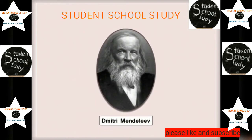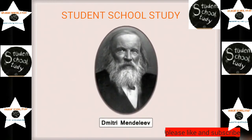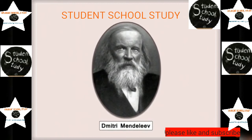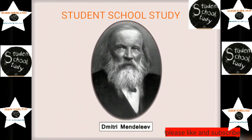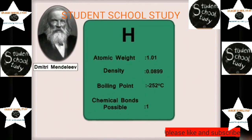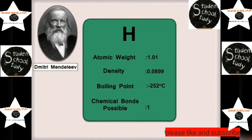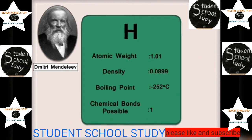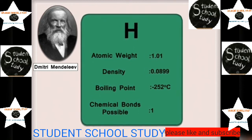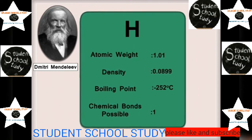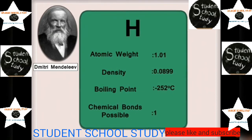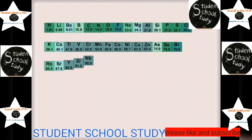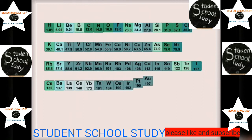The first successful classification of the 63 elements known at that time was given by Dmitri Mendeleev. He prepared a card for each element, noting its symbol along with some physical and chemical properties. Then he arranged all the cards in increasing order of atomic masses.